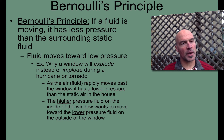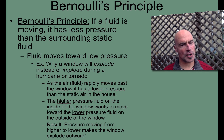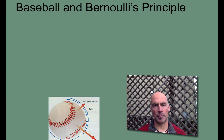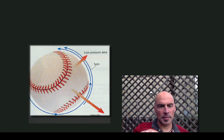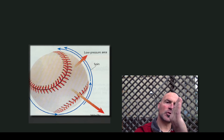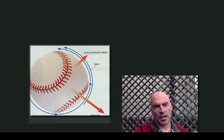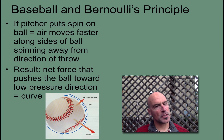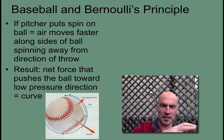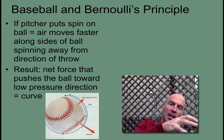The higher-pressure air on the inside of the window wants to move toward the lower pressure on the outside, so the pressure moving from higher to lower makes the window explode outward. We can also apply this to baseball: if the pitcher puts a spin on the ball, the air moves faster along the sides spinning away, which lowers the pressure on that side. The area of higher pressure wants to move into the area of lower pressure, so the net force pushes the ball toward the low-pressure direction, causing the ball to physically curve.